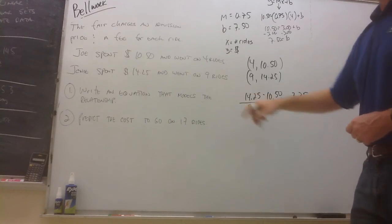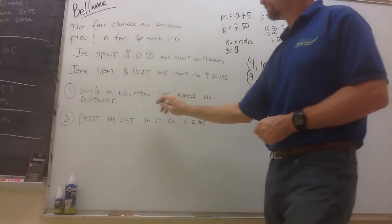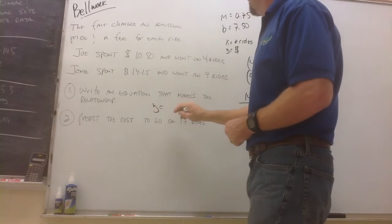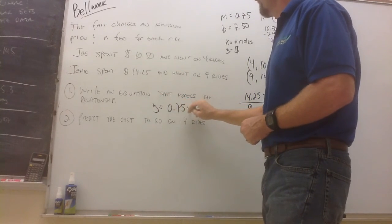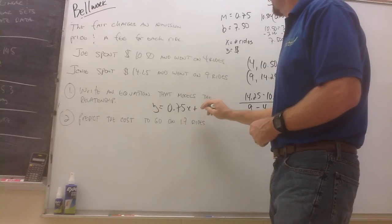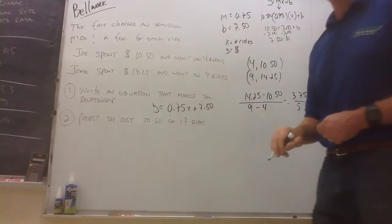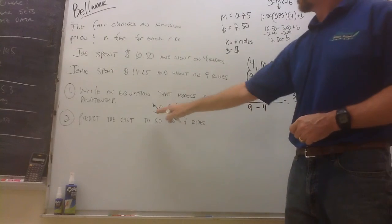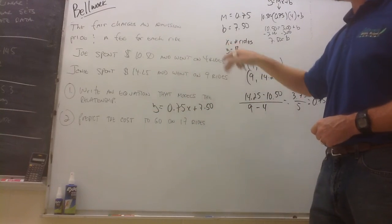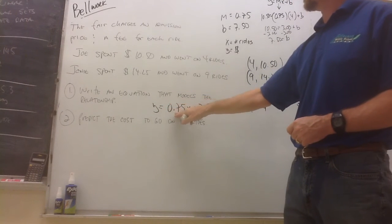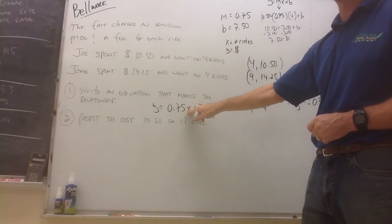So the equation that we're looking for is y equals 0.75x plus $7.50. What does this equation mean? y, remember, is the total cost.